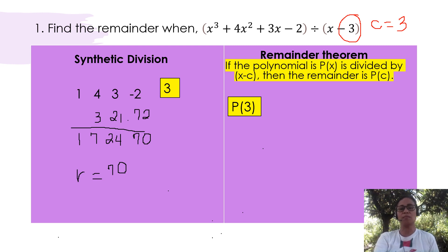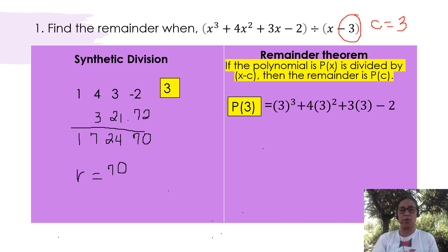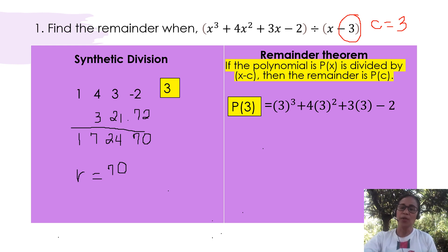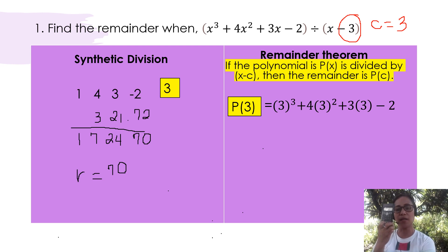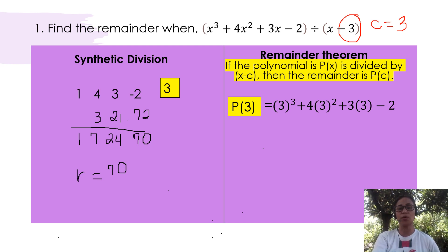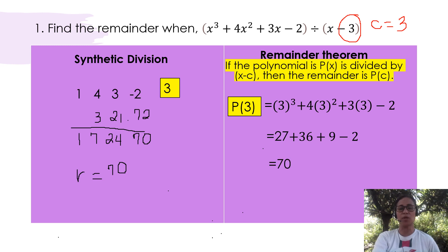With that, by substitution, we have 3 raised to the third power for x cubed, plus 4 times 3 raised to the second power for 4x squared, plus 3 times 3 for 3x, then minus 2. We can actually instantly obtain the answer by encoding all these values in our scientific calculator. So the value of 3 cubed plus 4 times 3 squared plus 3 times 3 minus 2, combining all these integers, gives us the value 70.